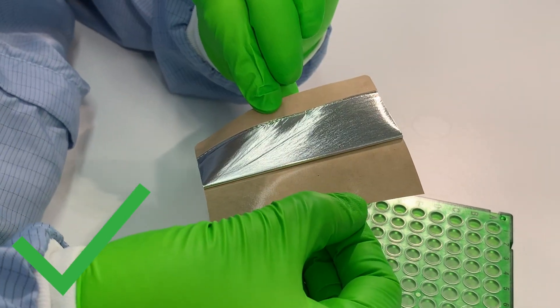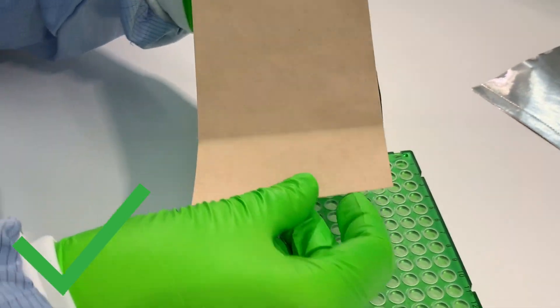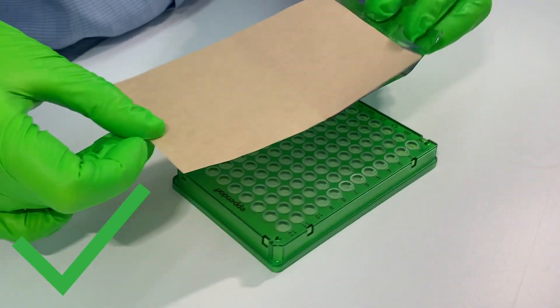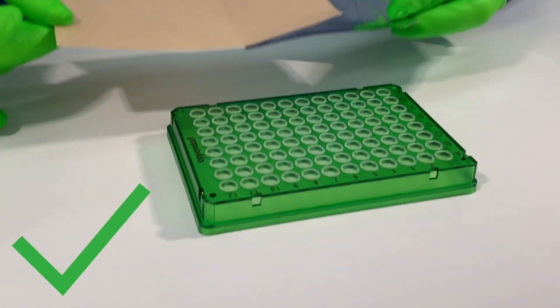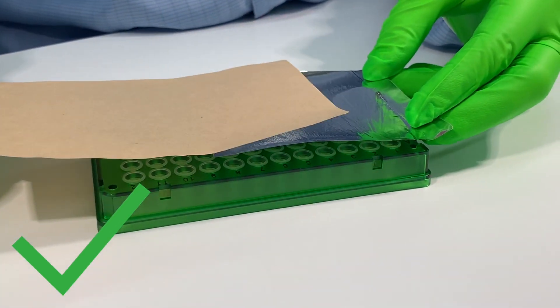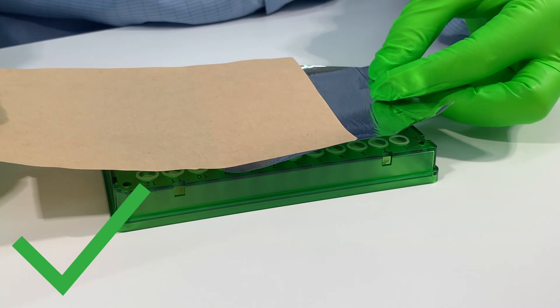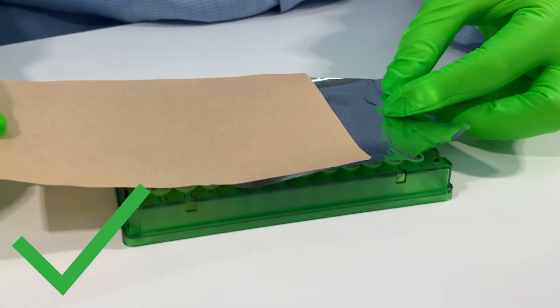Turn the seal so that the sticky side faces the plate. Place the seal in a way that the perforation is along the edge of the plate. Try to place it as straight as possible.